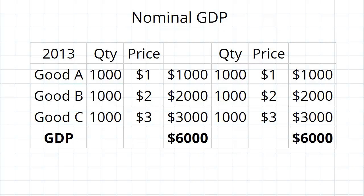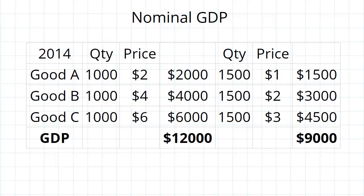Now in 2014, economy one sees rises in the prices from $1 to $2, $2 to $4, and $3 to $6. Since GDP is the total market value of all goods produced and sold, the GDP ends up doubling with quantities staying the same.